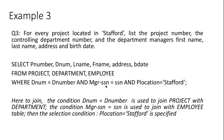The next condition, ManagerSSN = SSN, is used to join Department to Employee — we are checking whether a particular person is the manager. Then the condition Location = 'Stafford' is applied. So all three tables are joined: Project and Department are joined by checking DNUM = DNumber, the resultant table is joined with Employee by checking ManagerSSN = SSN, and finally we filter for Location = 'Stafford' to retrieve the required attributes.